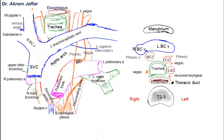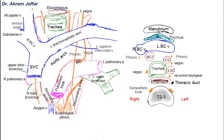The most anterior structure in the superior mediastinum is the thymus, an important component of the lymphatic system. It lies behind the manubrium of the sternum and may extend up into the neck or down into the anterior mediastinum. In adult life it is gradually replaced by fibrous fatty tissue. One last structure to add to this transverse section are the thoracic sympathetic trunks, located on either side of the vertebral column, most posteriorly. Don't forget that on the sides of these structures in the superior mediastinum are the lungs.